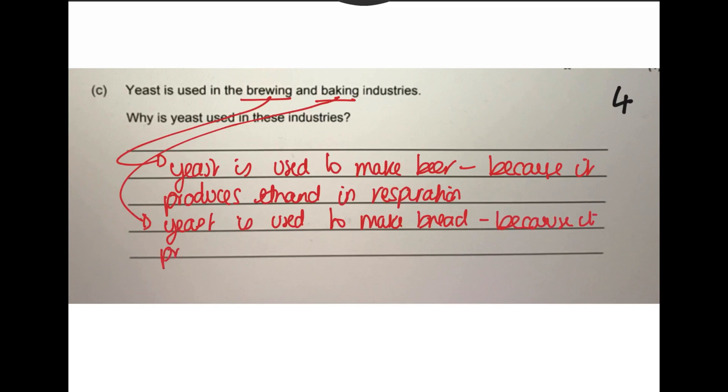Because it produces carbon dioxide. And that's what is needed to make your bread rise, to get all those nice air bubbles in it, to make it nice and fluffy. So yeast is used to make bread because it produces carbon dioxide, which makes the bread rise.